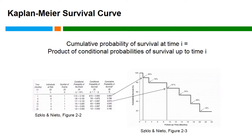A Kaplan-Meier curve is a graphical representation of the cumulative probabilities of survival at each time point. On the curve, the cumulative probabilities of survival are plotted on the y-axis, and the follow-up time is presented on the x-axis.